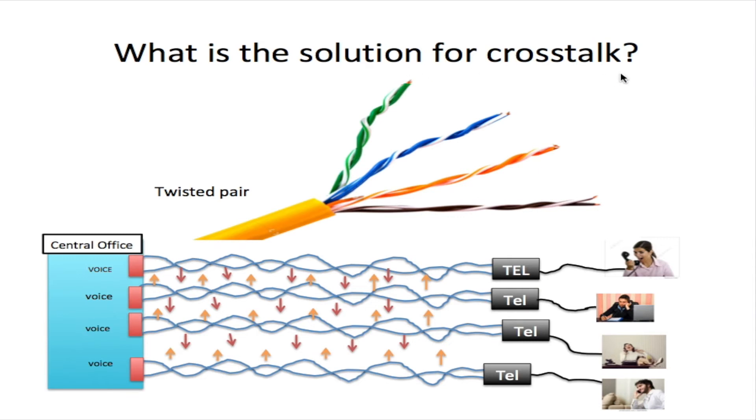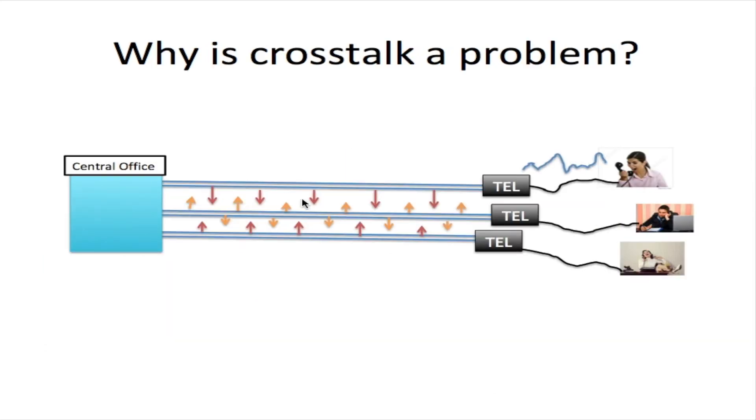What is the solution for crosstalk? Well, the solution for crosstalk is twisted pair. This is a twisted pair cable. This is just a matter of taking the two wires and twisting them together. In the diagram we were speaking on before, these are straight wires, they are not twisted at all. Because they are not twisted, you are not able to cancel the crosstalk after it is induced.